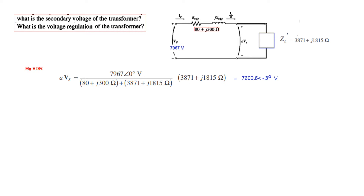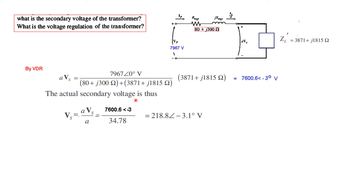So now we have A·V_s, and from this we can calculate the actual secondary voltage V_s. V_s equals A·V_s divided by A = 34.78. So the secondary voltage V_s is 218.8 V at angle −3.1°. This completes the first part.